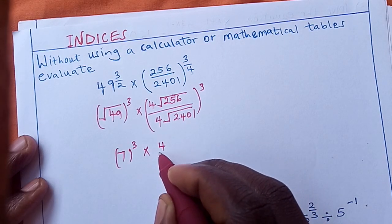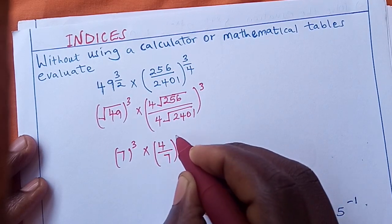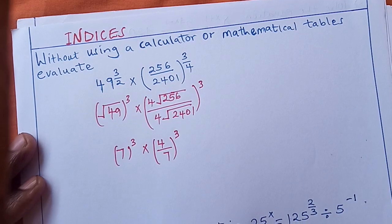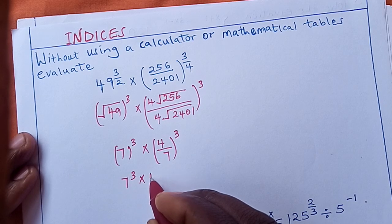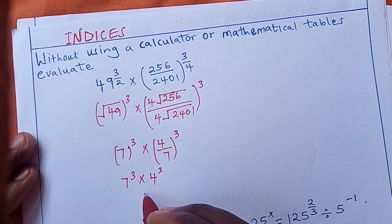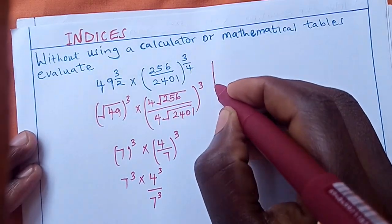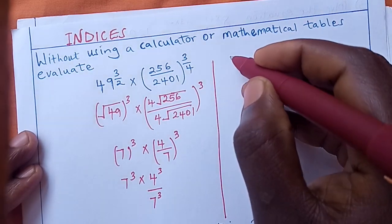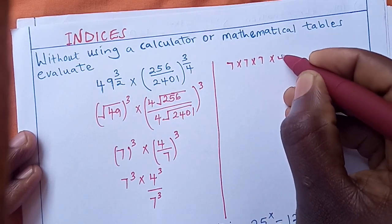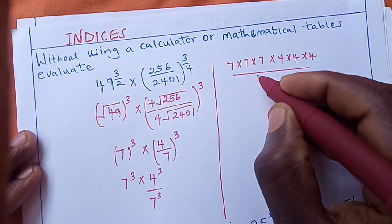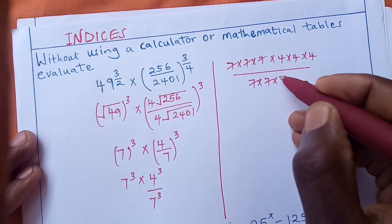We raise that result to power 3. The fourth root of 256 is 4, and the fourth root of 2401 is 7. So the fraction is 4 over 7, raised to power 3. We can rewrite this as 7 raised to power 3, multiplied by 4 raised to power 3, divided by 7 raised to power 3.